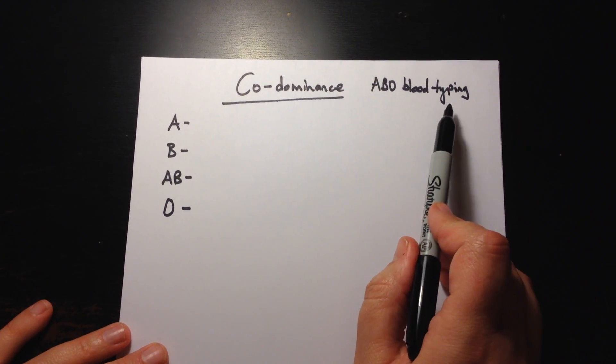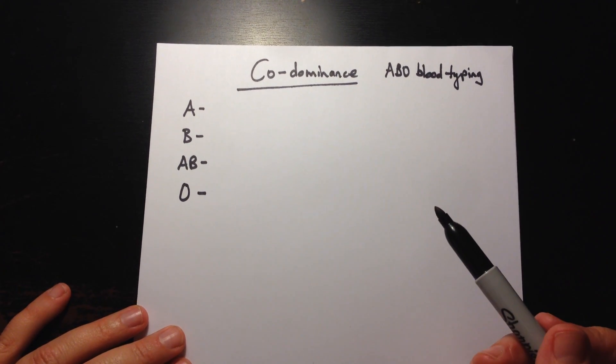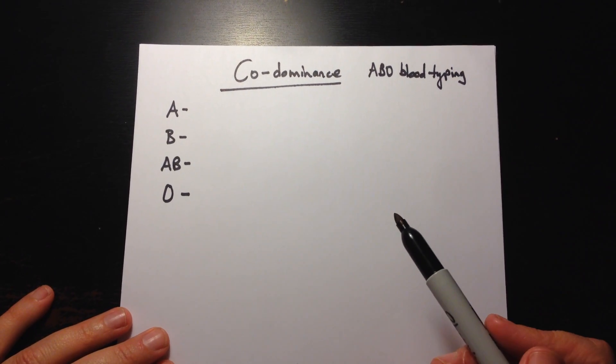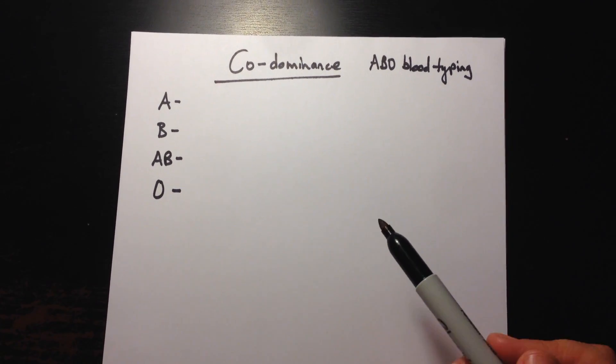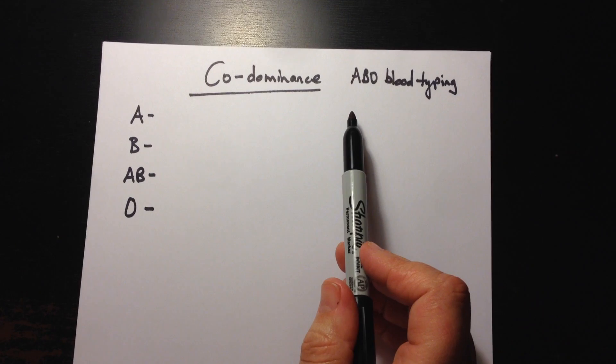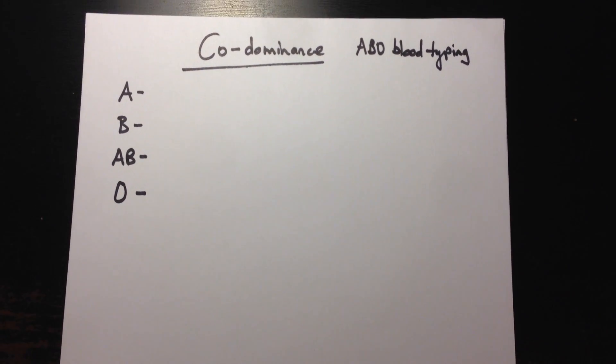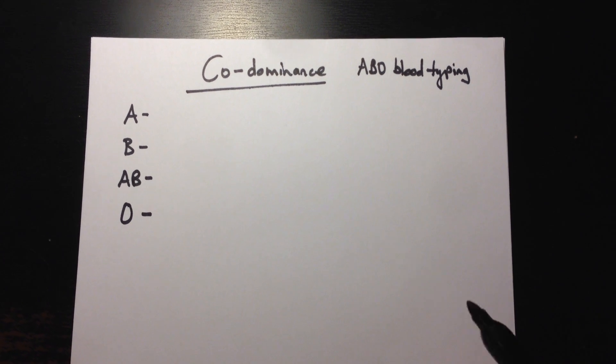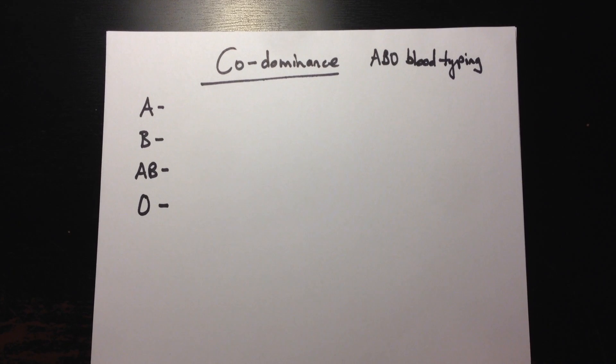I just want to say at the start that the ABO system is just one blood type that we have in humans. There are actually more than 30 different blood types that have been described in humans and this is the most well-known one. So you probably know your blood type. You could be O positive or negative or A positive, negative, B positive, negative or AB positive or negative.